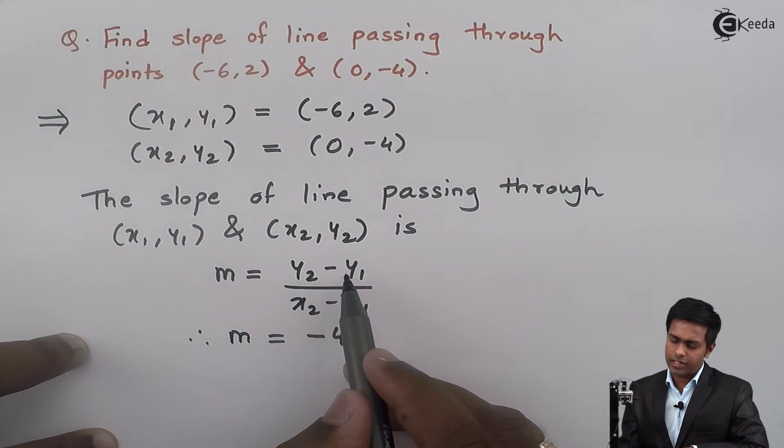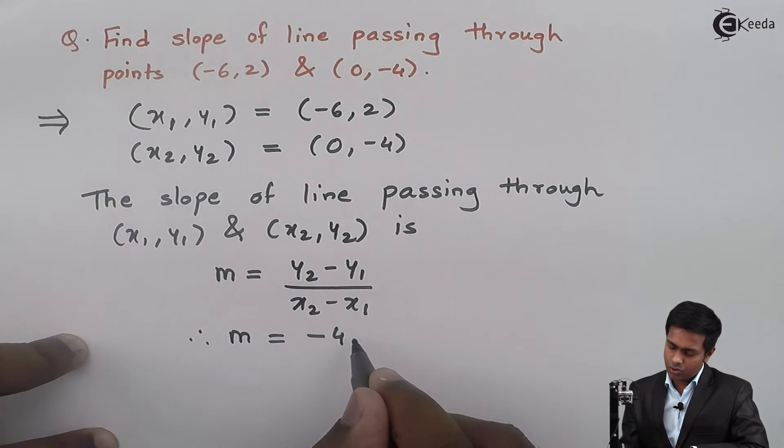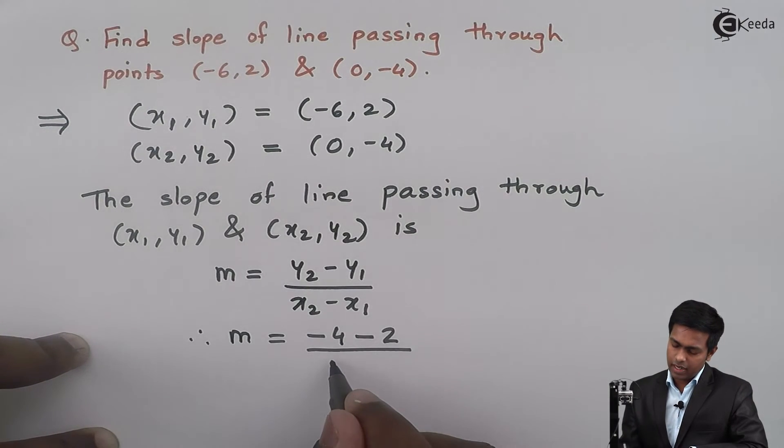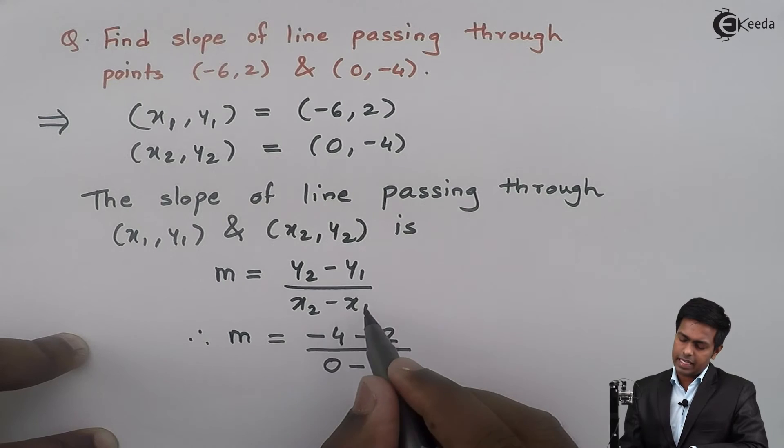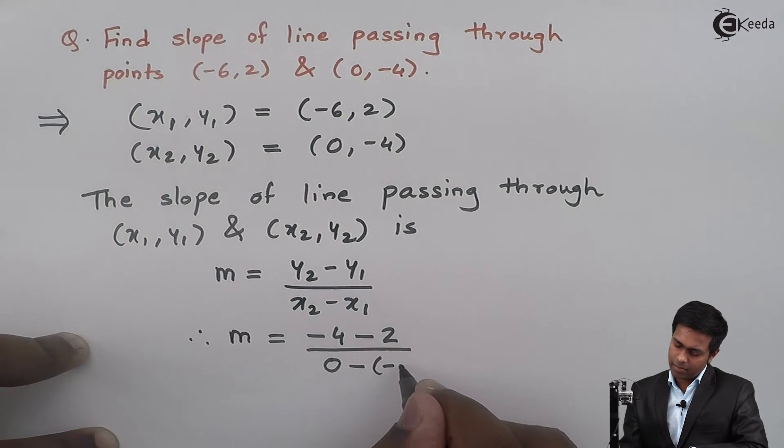So -4, next minus y₁. Here y₁ is 2, so -2 upon x₂. So here x₂ is 0, minus x₁ and x₁ is -6, so I will write it here -6.